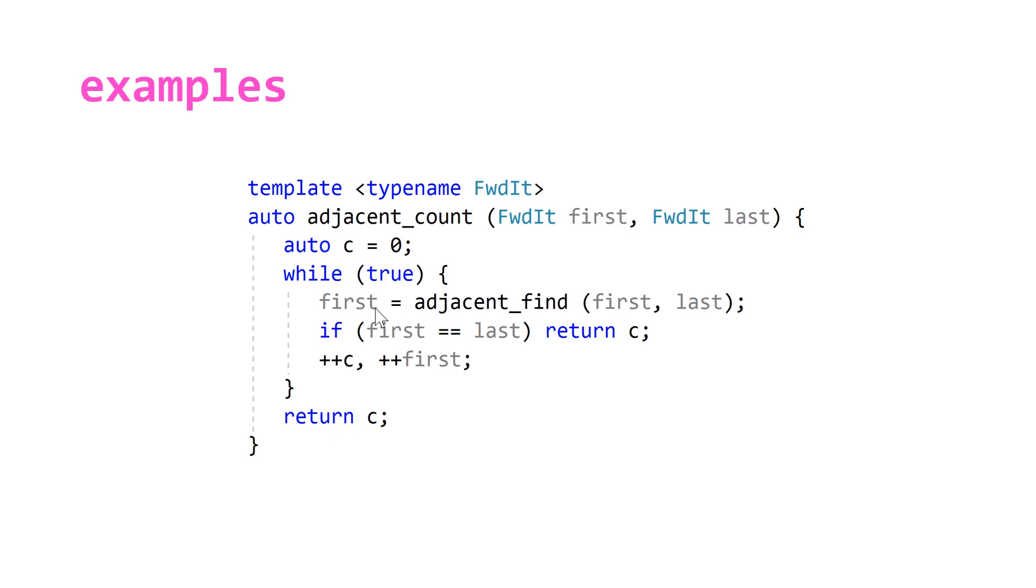So we do this by just making a call to adjacent_find and setting first equal to the result, checking if first is equal to last, meaning that it wasn't able to find any more adjacent equal elements, and then returning the count. Else, incrementing c and also incrementing our first iterator so that we don't include this in the next search.